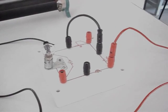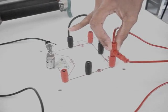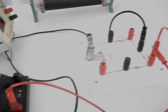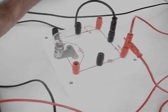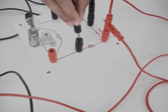From the red terminal of the battery, we connect it to the positive terminal of the ammeter. From the black terminal of the ammeter to the black terminal in the circuit board.